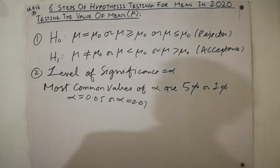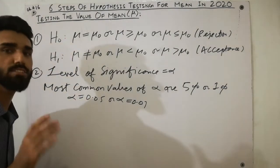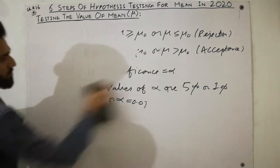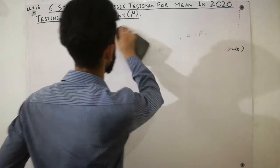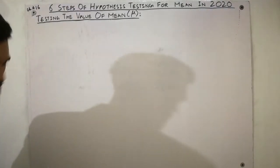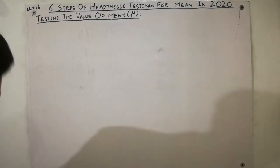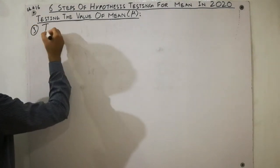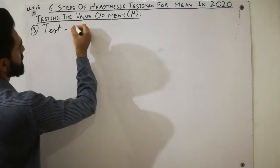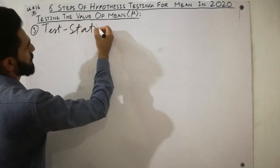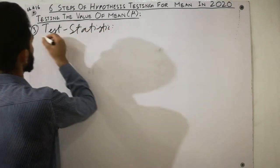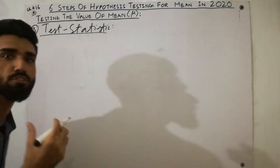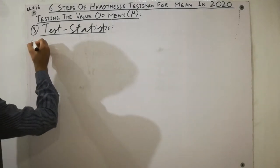Step three is the test statistic. The test statistic is a formula used to compute the calculated value. There are three important points here — A, B, and C — which are very important and which nobody tells you about.